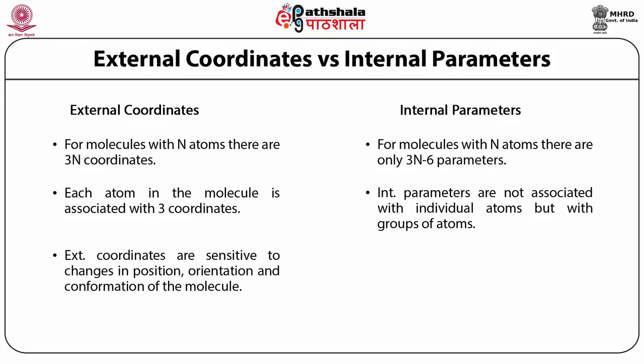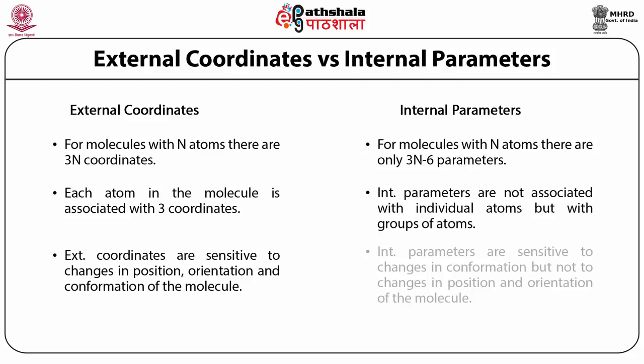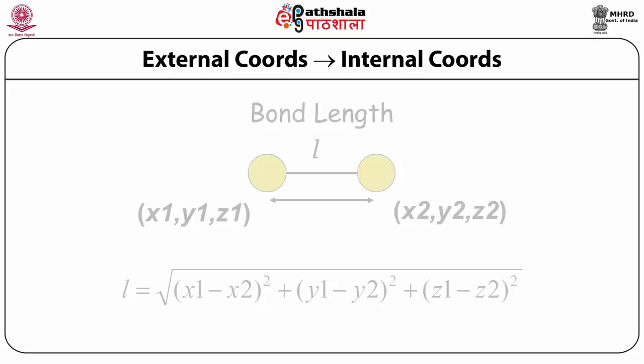External coordinates are very sensitive to any change in the position of the molecule — if I move it without changing its conformation, the external coordinates will change. This may be good sometimes and may not be good sometimes. Internal coordinates, on the other hand, will not change unless there is a change of conformation or configuration of the molecule. So if you are specifically interested in conformational or configurational changes, internal coordinates might be advantageous. However, if studying more than one molecule and how they interact, external coordinates are better because internal coordinates only specify what is internal to the molecule and not the relationship between molecules.